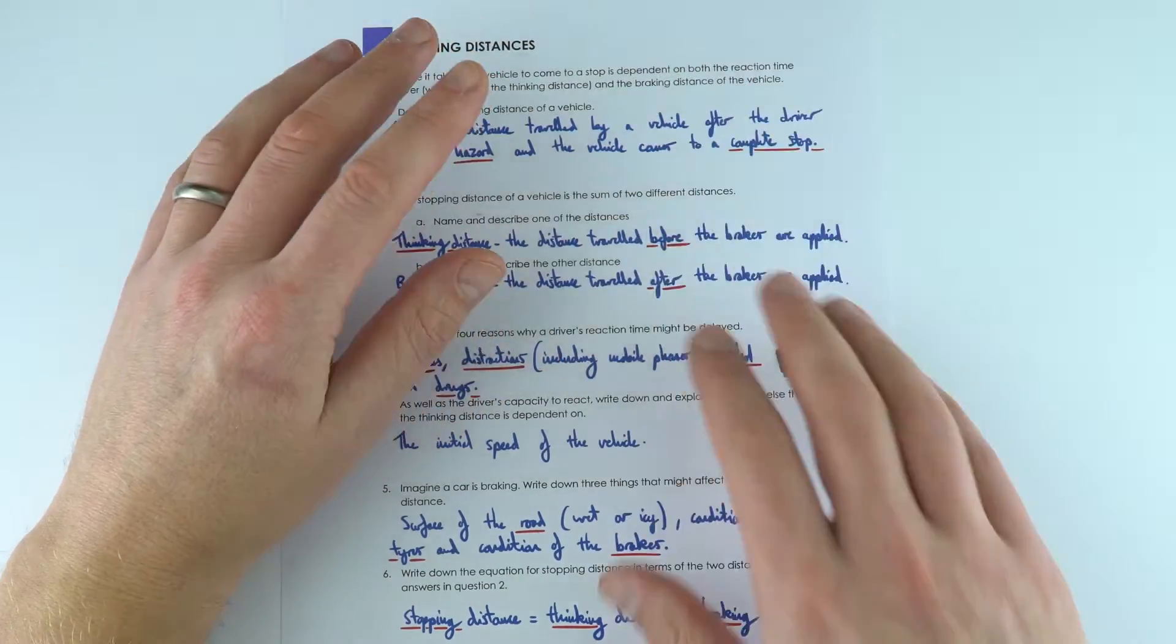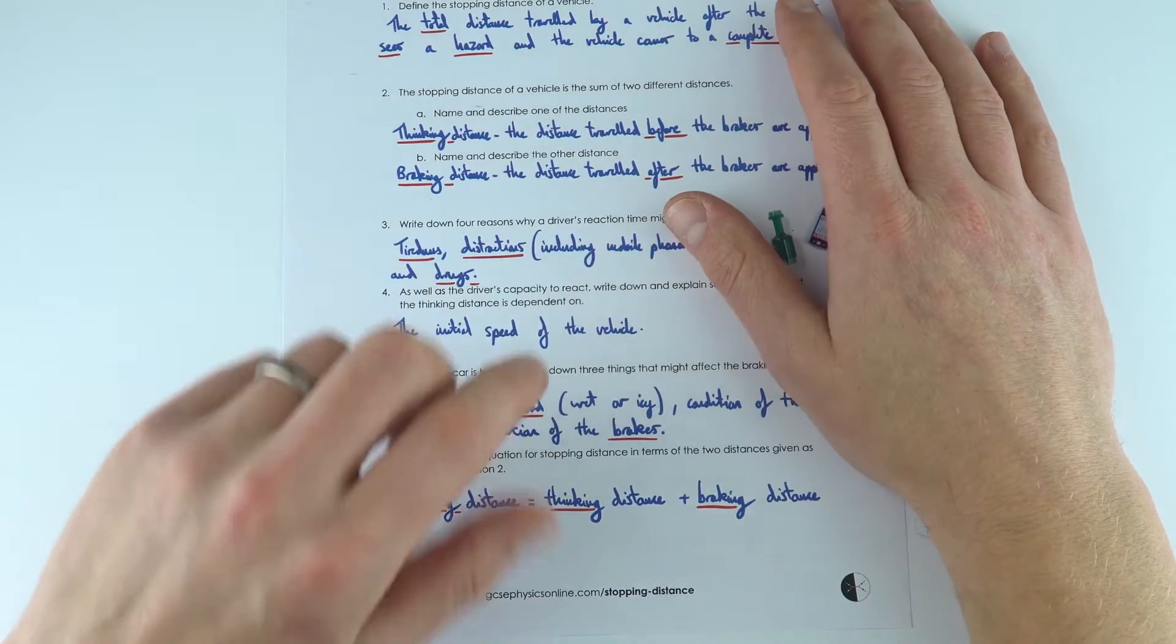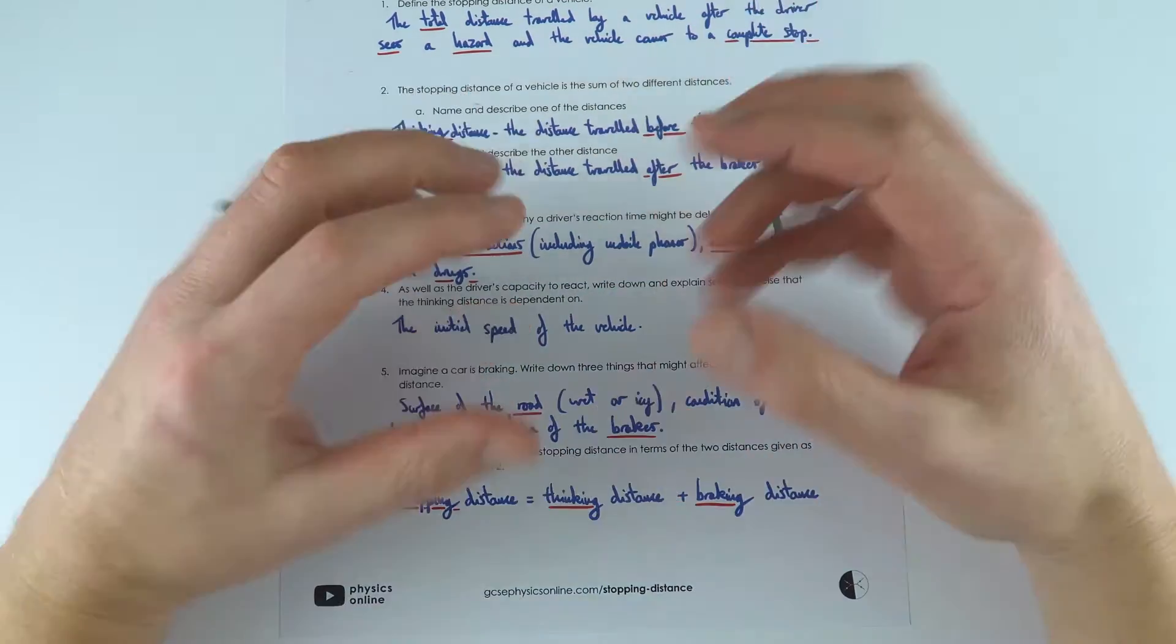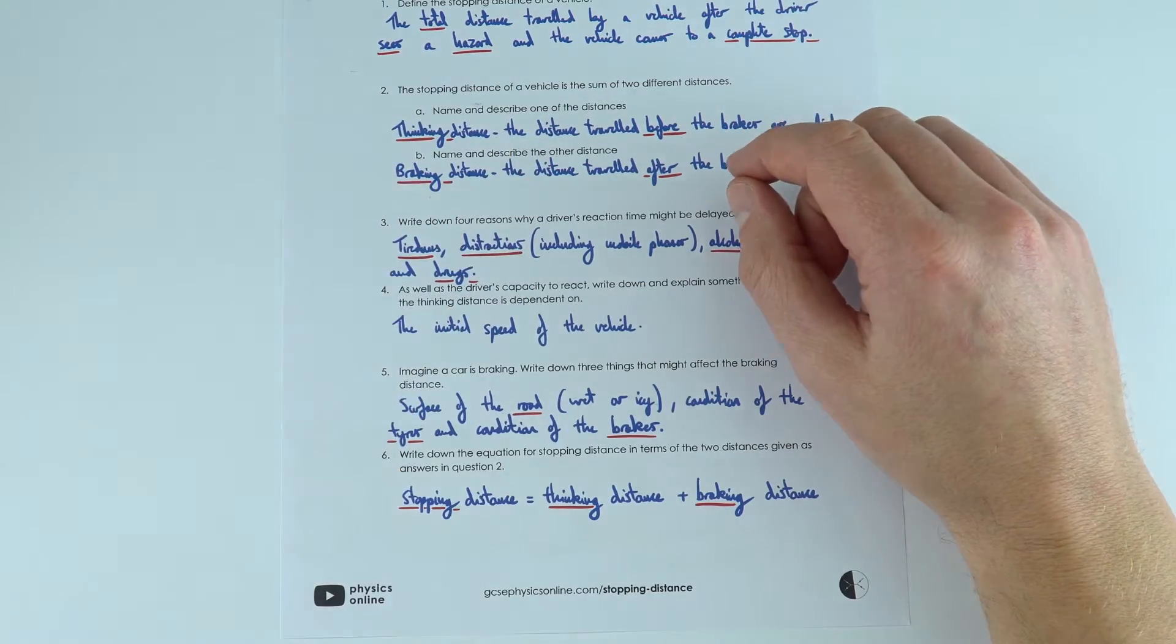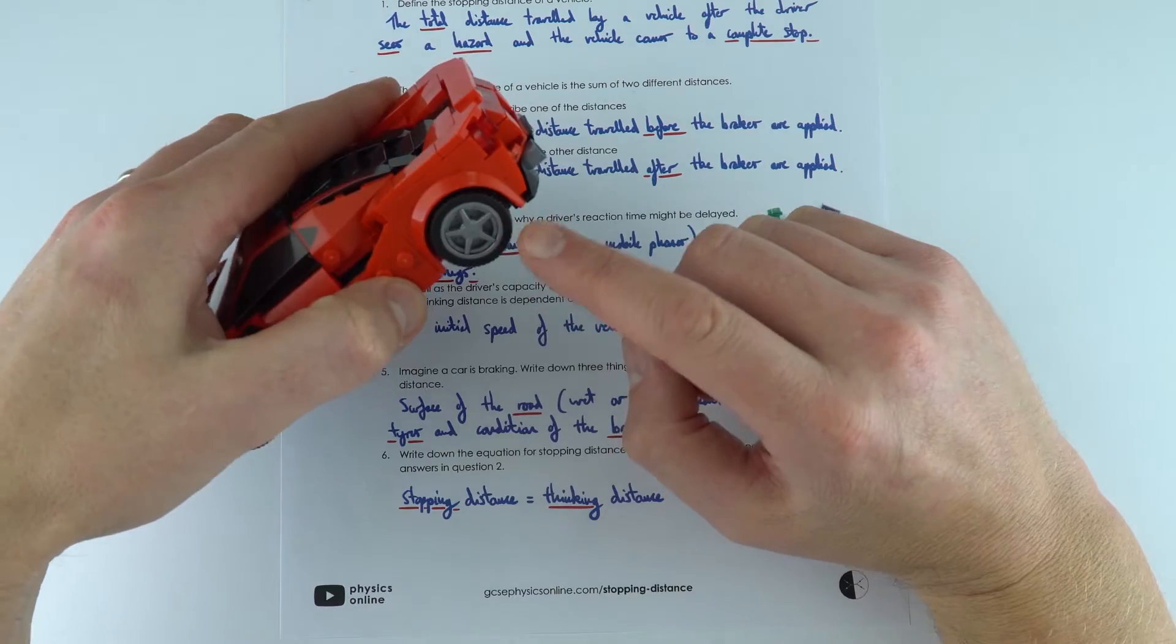But once it has braked, things that might affect that include the surface of the road, if it's wet or icy, if it's muddy, that's going to reduce the friction between the tires and the road, and also how good a condition the tires are in and the condition of the brakes.